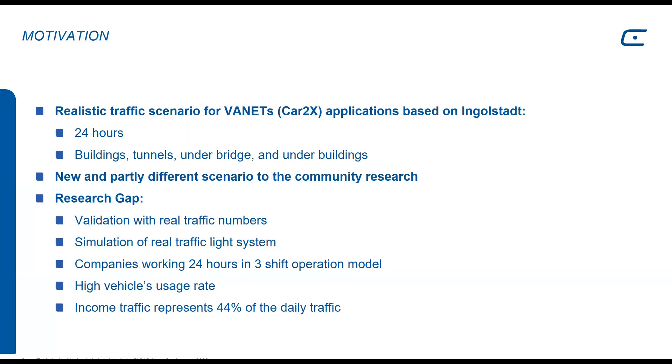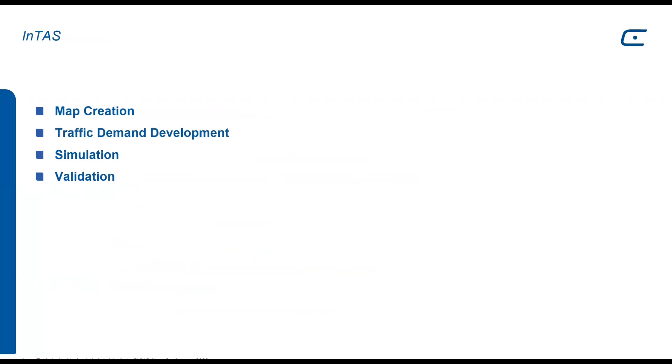Another motivation is to provide a new and partly different scenario to the community research. Our research gap includes validation with real traffic numbers, simulation of a real traffic light system, companies working 24 hours in three-shift operation model, high vehicle usage rate when compared with other German cities, and high income traffic to the city, which represents here in Ingolstadt 44% of the daily traffic.